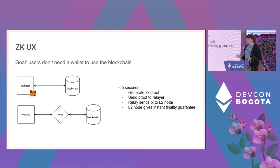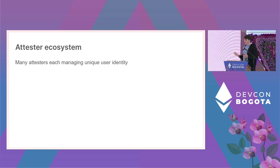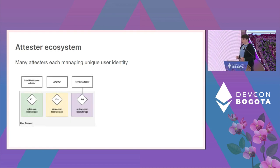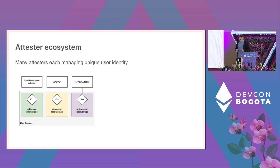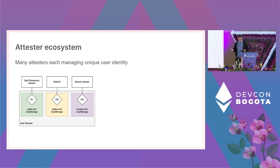To build an ecosystem using ZK proofs in this abstracted architecture, consider three different attester applications each managing a unique identity for the user inside browser local storage. We can treat these identities more like web2 authentication tokens — making ZK proofs in the background without prompting the user. Using different identities per website also contains damage: if one identity is compromised due to malicious JavaScript, only that single attester is affected.